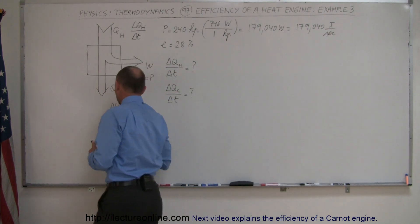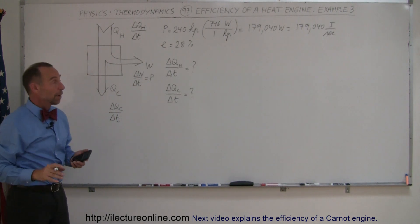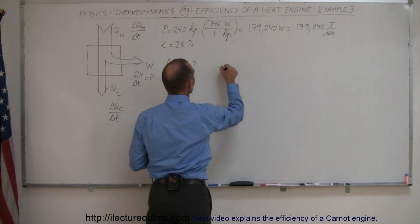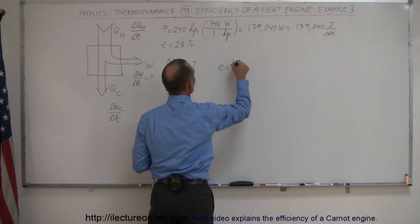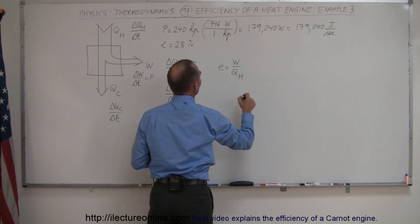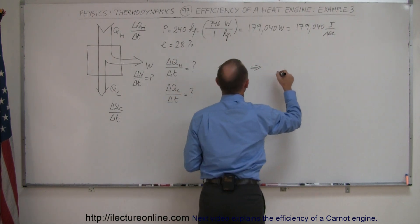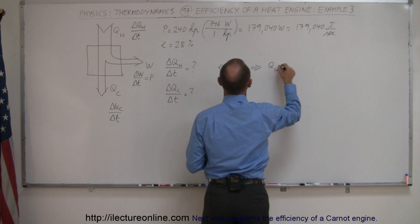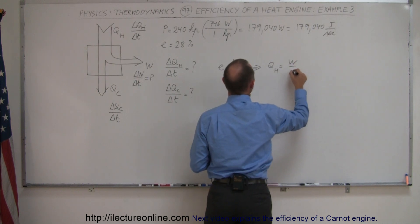All right, so now that we've converted that, we can come up with our efficiency equation. Efficiency is equal to work over Q-hot. And so what this then means is we can say Q-hot is equal to work divided by efficiency.